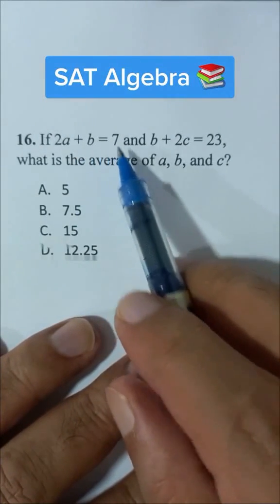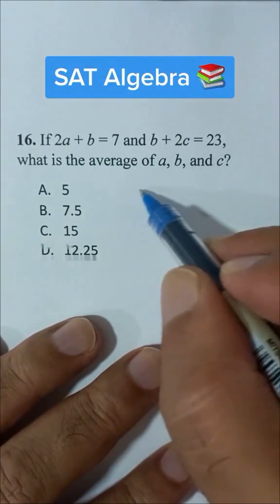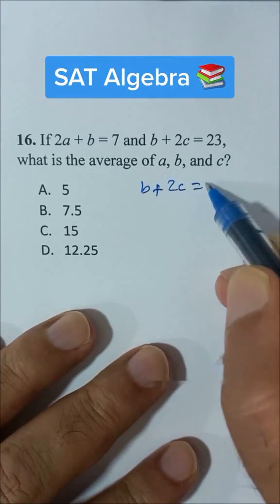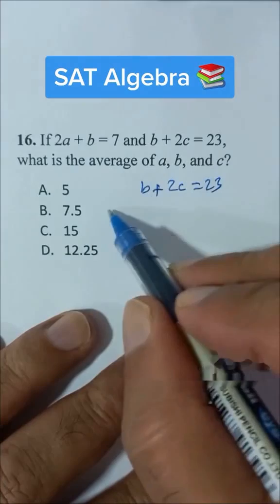If 2a plus b is equal to 7 and b plus 2c, let's write it here, 2c is equal to 23. 2a